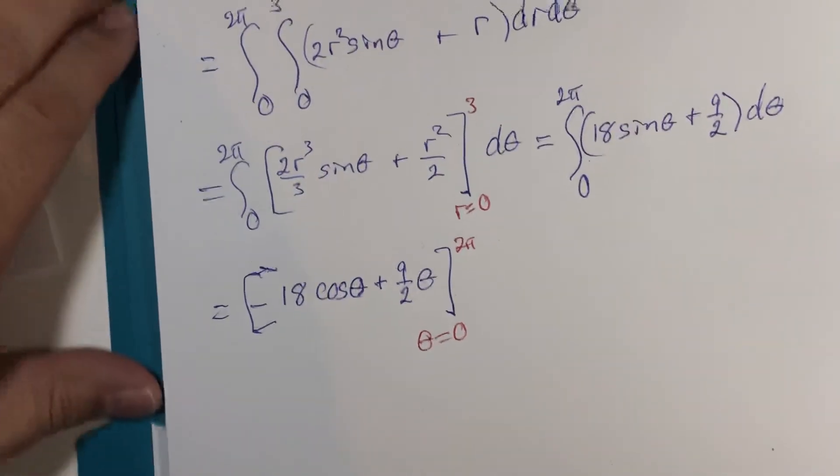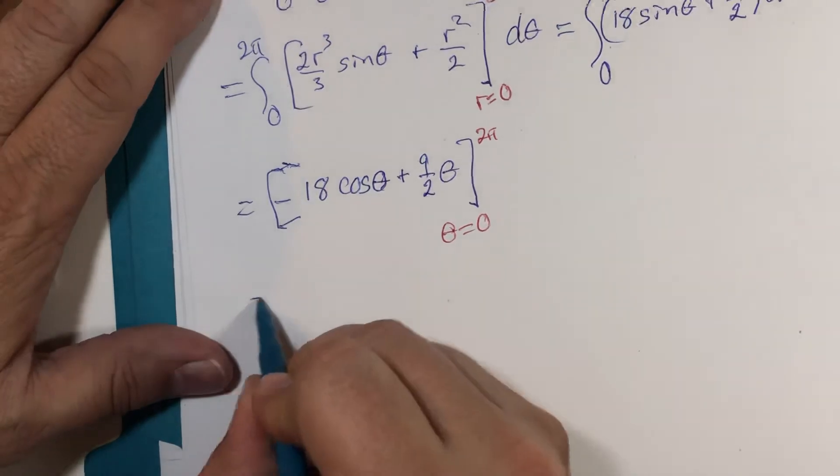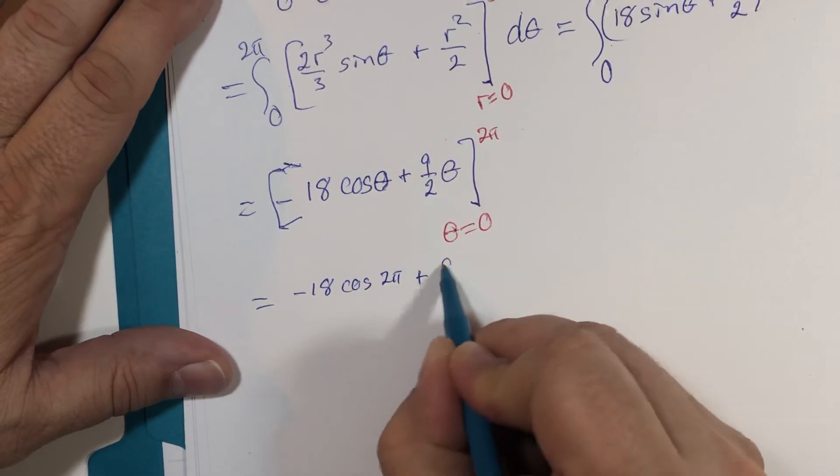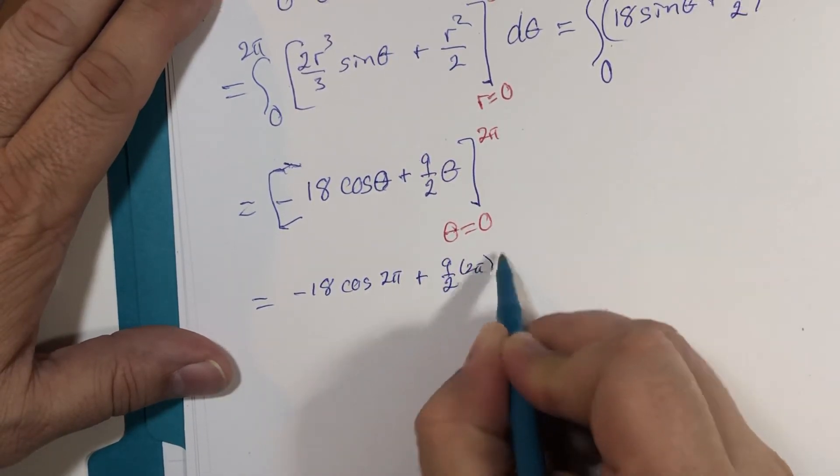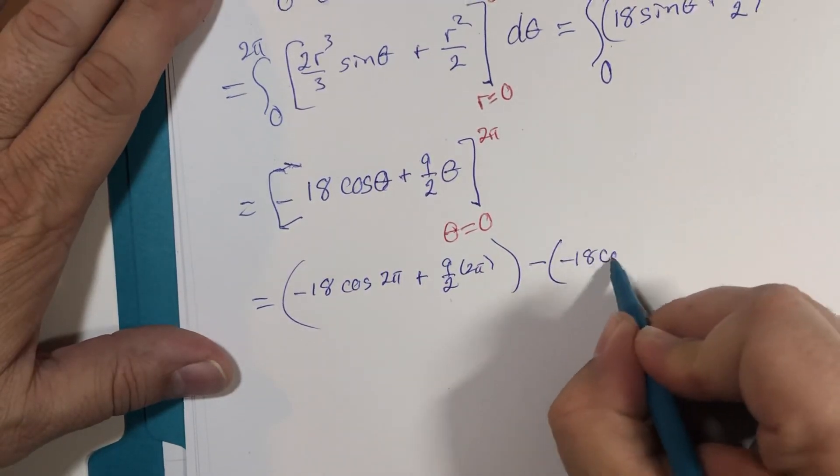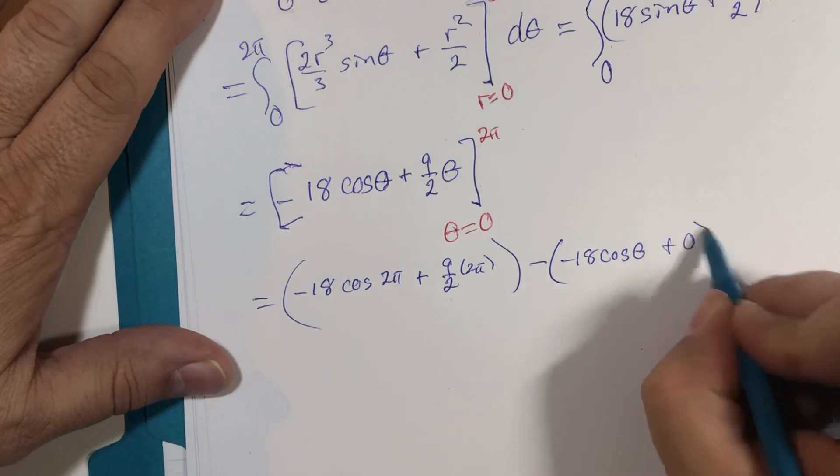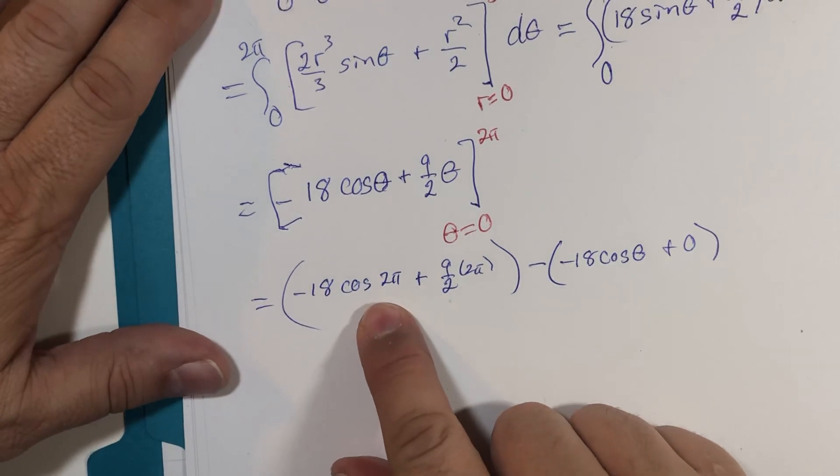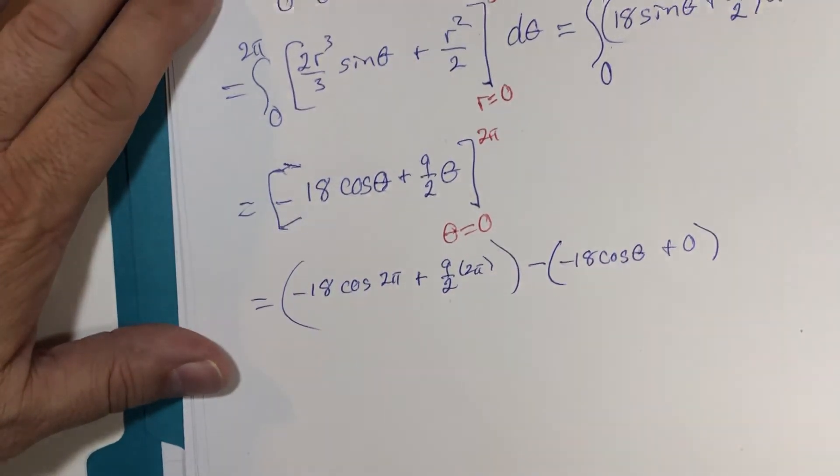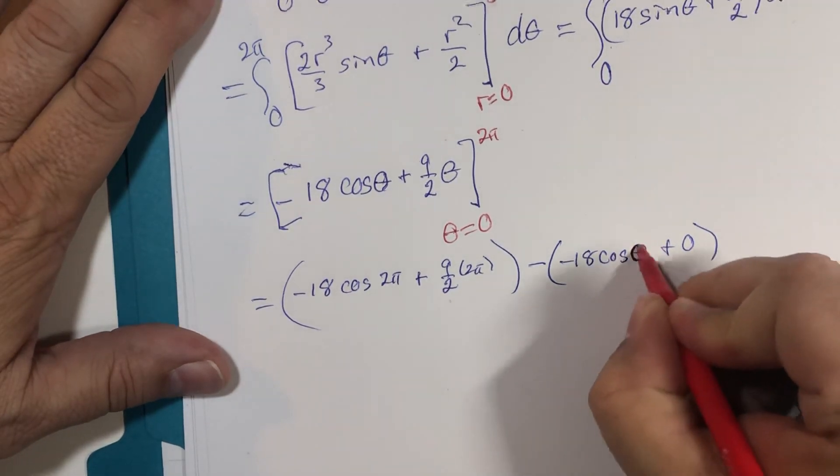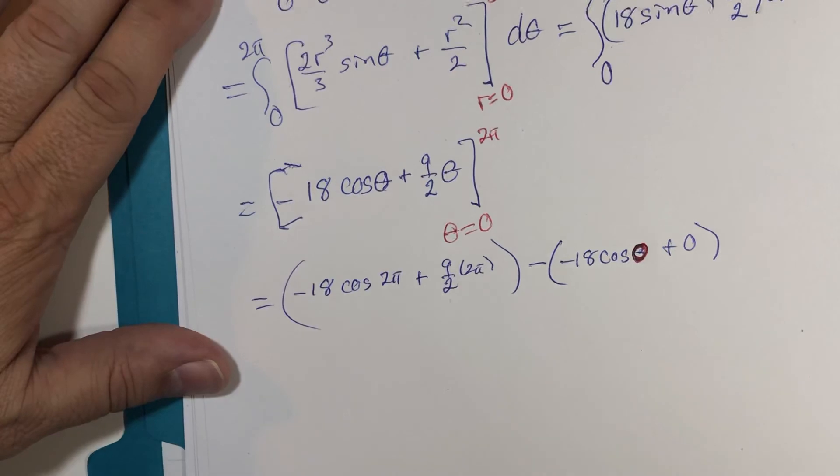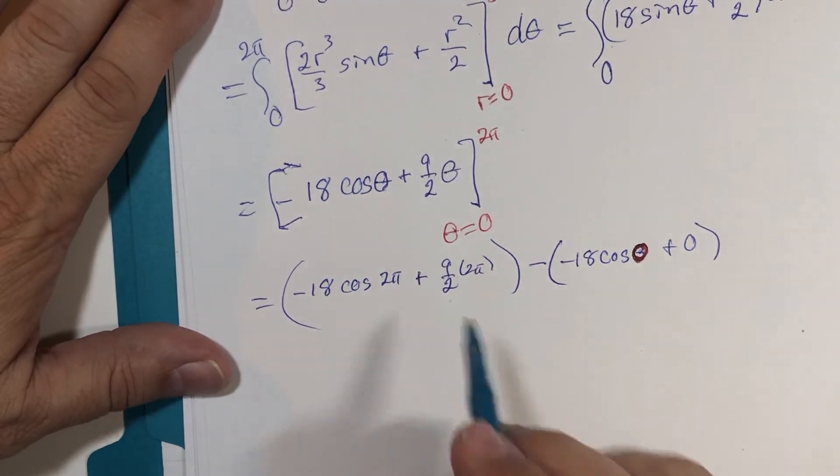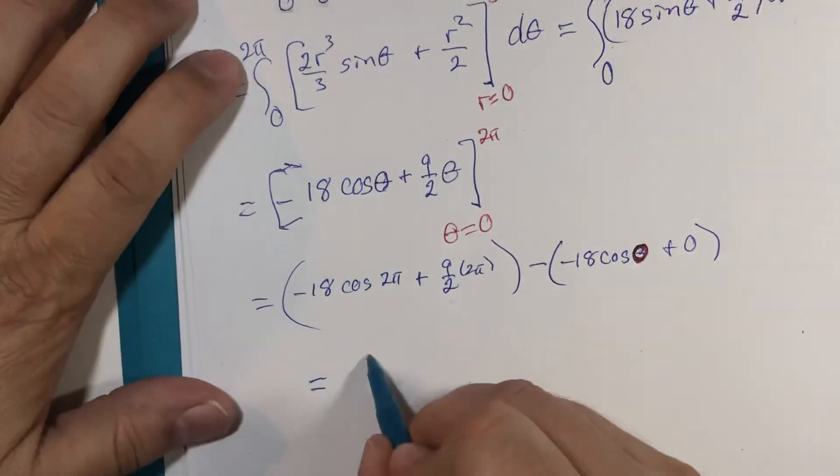And theta goes from 0 to 2 pi. All right. I'm going to write out a little bit more than normal here. Negative 18 cosine 2 pi plus 9 halves times 2 pi, minus negative 18 cosine 0 plus 0. The cosine of 2 pi is equal to the cosine of 0. These two terms will add up to 0. That term is 0. That term is 0. I end up here with 9 pi.